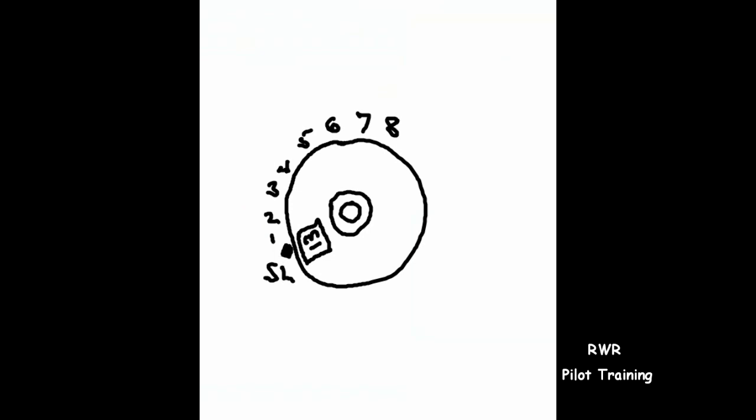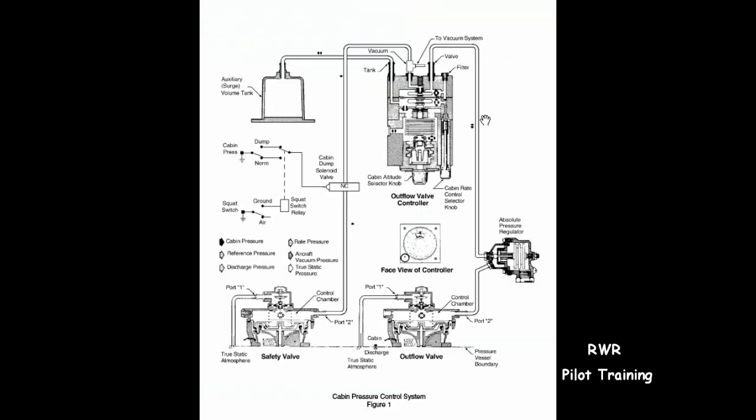What this means is at 13,000 feet, the cabin reaches a 5.5 PSI delta and cannot deliver anymore if the valve is working correctly. Remember, the safety valve opens at 5.6 PSI.